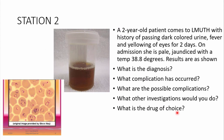Station 2: A two-year-old patient comes to Levy Mwanawasa University Teaching Hospital with a history of passing dark-colored urine, fever, and yellowing of the eyes for two days. On admission she is pale, jaundiced, and has a temperature of 38.8 degrees. A urine sample and blood slide are shown. What is the diagnosis?